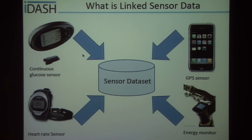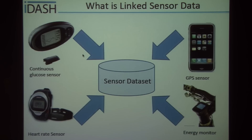Linked data, in terms of what we'd like to be using, is data that when viewed in the aggregate is more useful than when viewed individually. For our dataset, we have the continuous glucose sensor, heart rate sensor, GPS sensor, and an energy monitor taken from type 1 diabetic patients. We're hoping that by looking at all of this data as a whole, we could get more information out of it than just by studying glucose or just the heart rate alone.